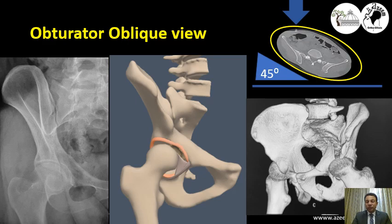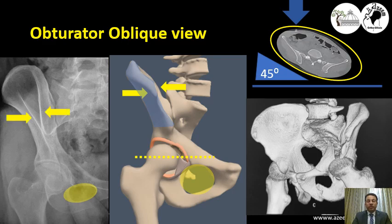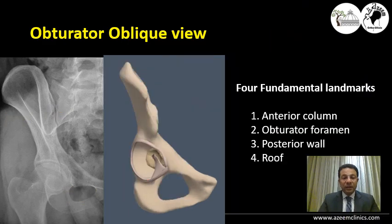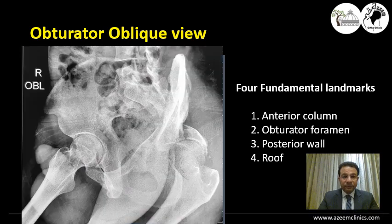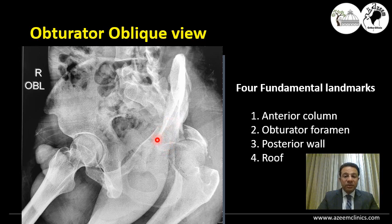The obturator oblique view is done by turning the patient 45 degrees internally. The best view is identified radiographically by having the anterior superior and posterior superior iliac spines at the same point, showing the largest possible portion of the obturator foramen. On the obturator oblique view, four fundamental landmarks can be identified: the anterior column, the obturator foramen, the posterior wall, and the anterior part of the roof. This is an obturator oblique view of a patient showing a fracture of the posterior wall and a transverse fracture with a discontinuity of the anterior column.